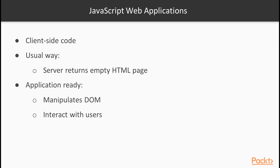When we talk about JavaScript web applications, we usually think of client-side code that lives in the browser. The way they usually work is that the server returns an empty HTML page with a script tag to load the application. When the application is ready, it manipulates the DOM inside the browser to show the UI and to interact with users.